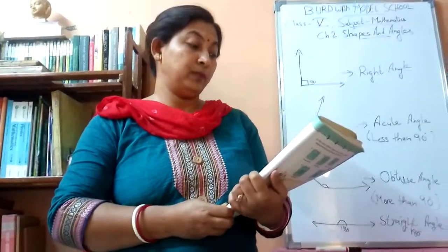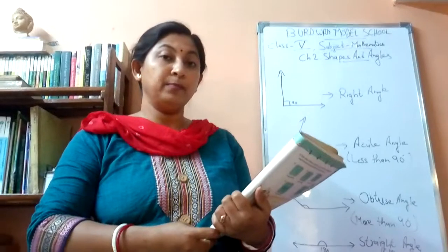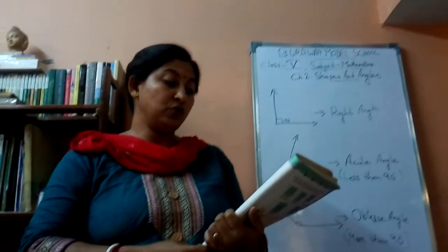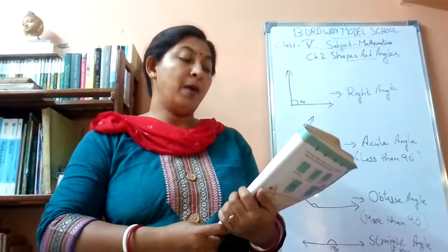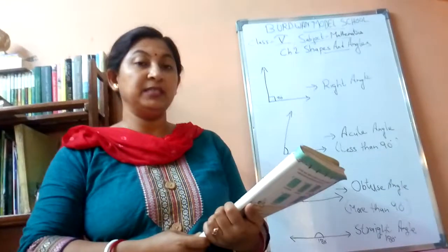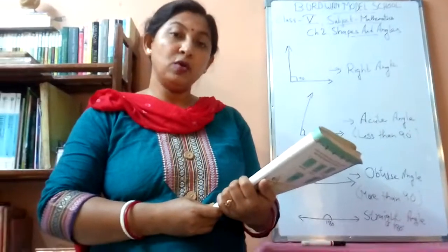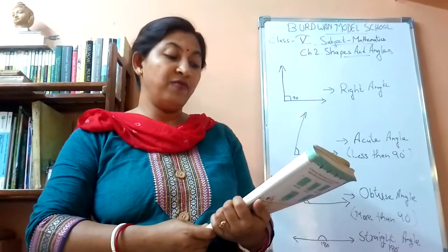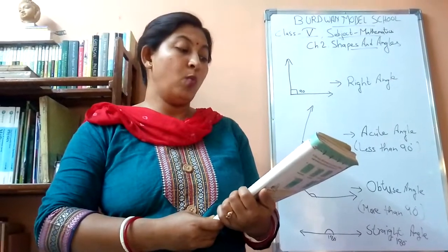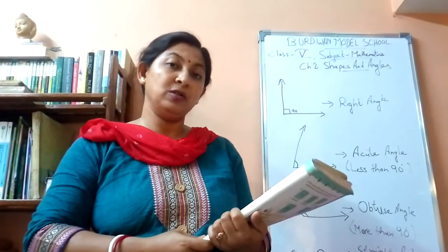Next, question number 2: are the angles marked with yellow equal? There are some figures given with the help of matchsticks. Look at the figures and answer. The angles marked with yellow — yes, they are equal. Then are the angles marked with green equal? Yes, they are also equal. And those marked with blue color — they are also equal. So in all 4 figures, the ones marked yellow are all equal, the ones marked green in all 4 are equal, and the ones marked blue in all 4 are also equal.